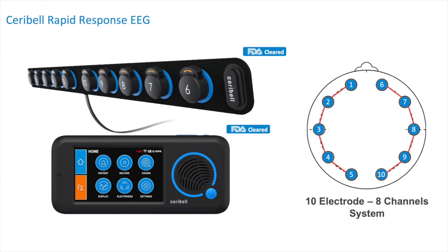Rapid response EEG system consists of two parts. One is the headband system, which is disposable. It can be reused on the same patient, but it shouldn't be used across patients, and the pocket-sized EEG recorder. Both of them have been FDA cleared.